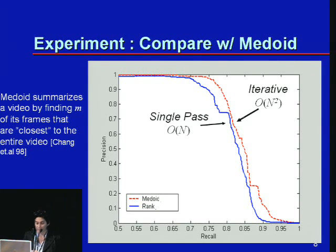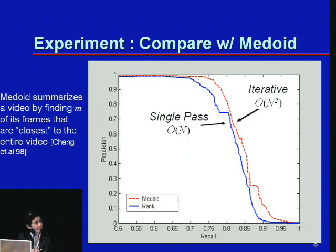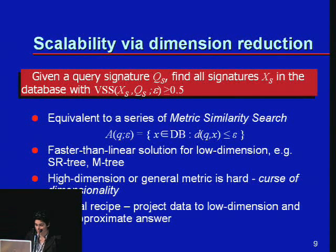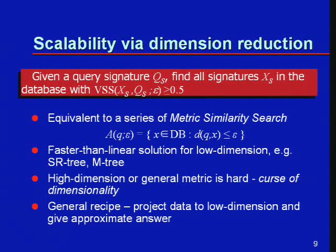This shows the performance of this simple idea. One key thing to note is that this is precision versus recall. The existing techniques in the literature — the iterative techniques — were O(N²), where N is the number of videos in your large database. Our algorithm was O(N), which is quite a significant improvement. The signature vectors we came up with were very large — 712-dimensional — and there were 100 of them, so each video was represented by 700 times 100, that's 70,000 numbers.